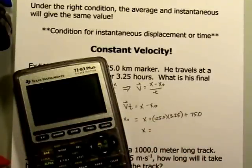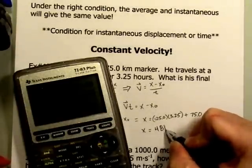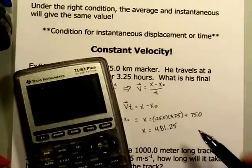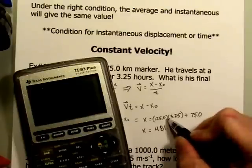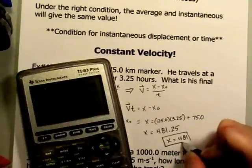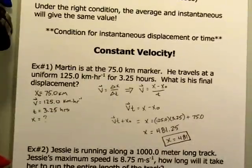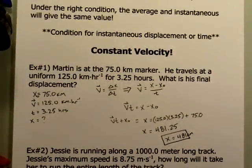Let's see how that works out. We take 125 times 3.25 plus 75.0. Our answer is 481.25. These two have no more than three significant figures, and we can't go beyond the last place after the decimal, so our final answer is 481 kilometers.